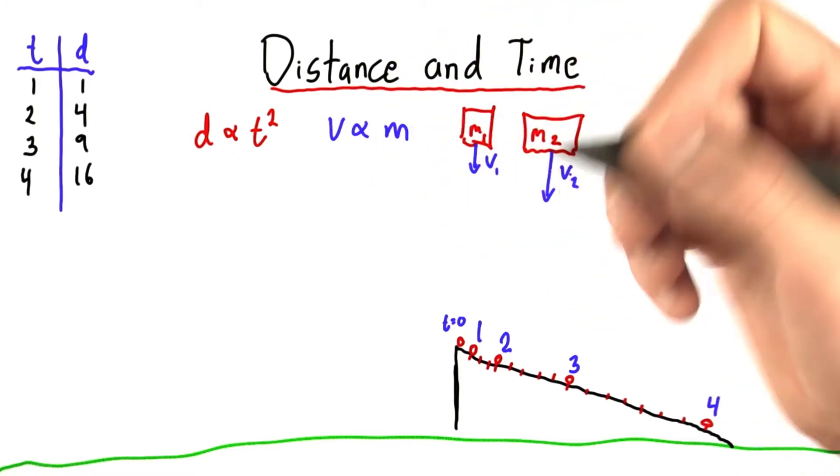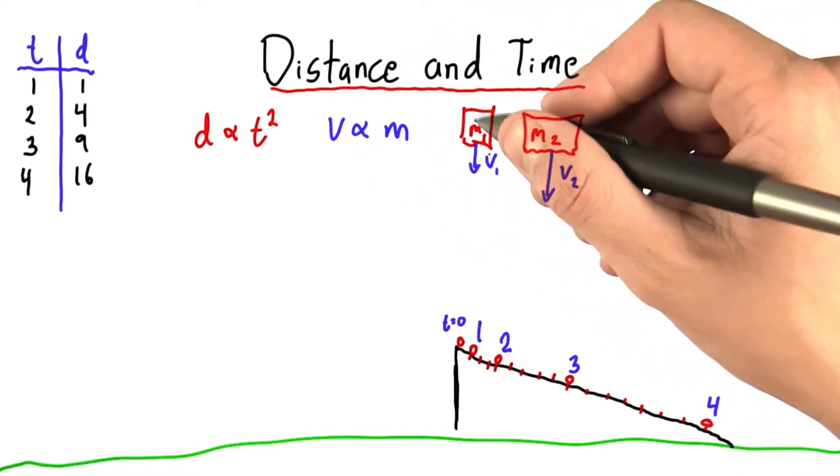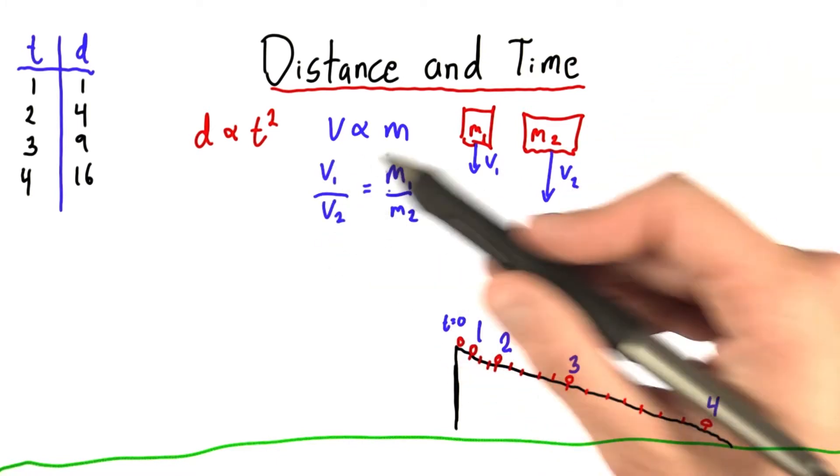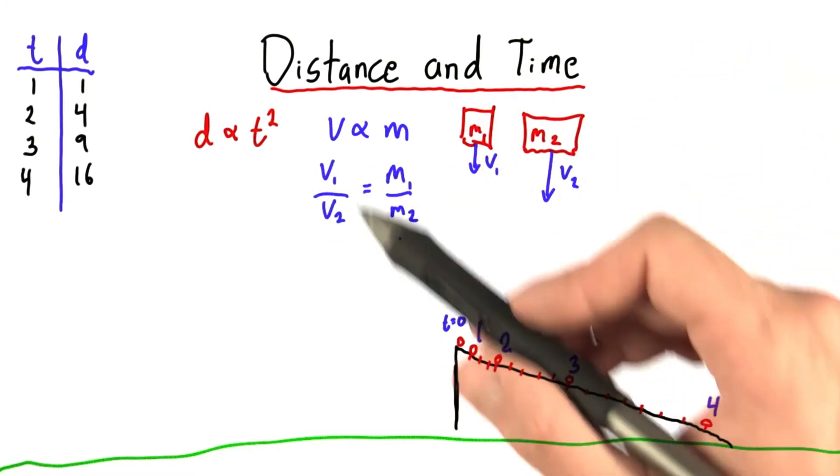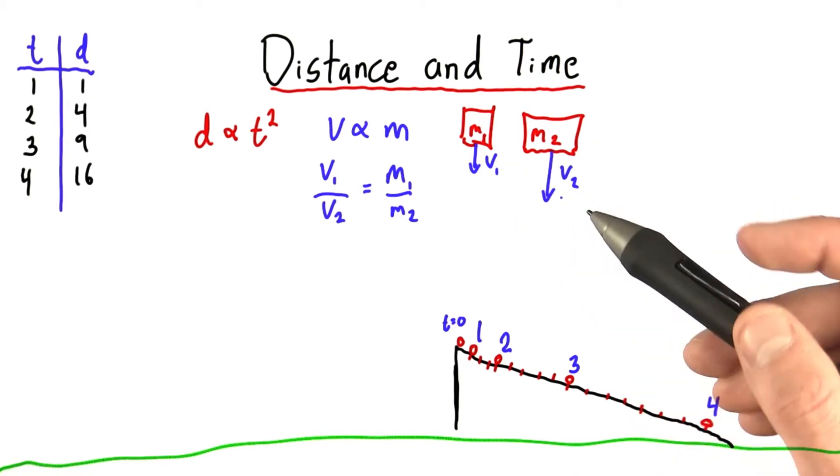So if we have two objects, 1 and 2, with masses 1 and 2, and some velocities that we're assuming are proportional to that mass, we can set up this equation. And if we happen to know three of these quantities, so maybe two masses and one velocity, we can figure out the unknown quantity. Okay, not so bad.